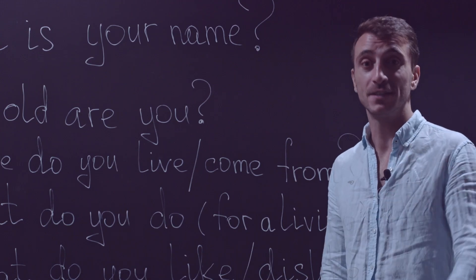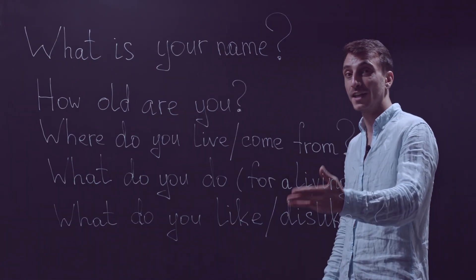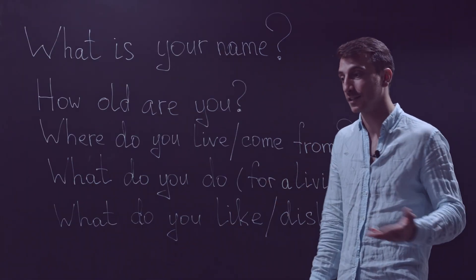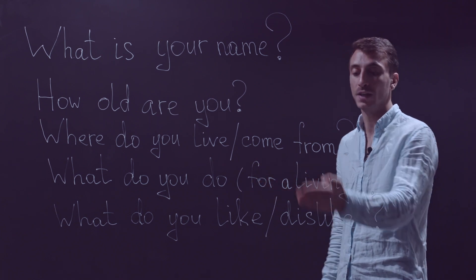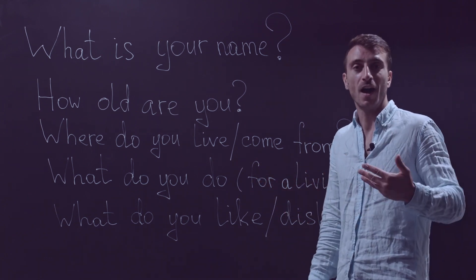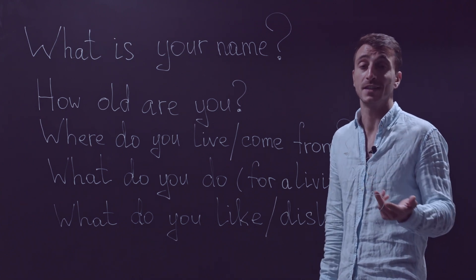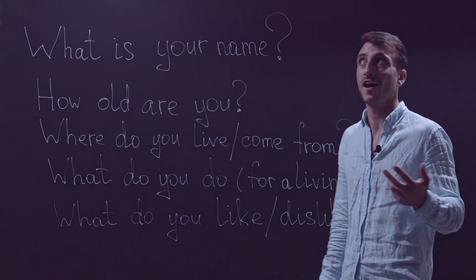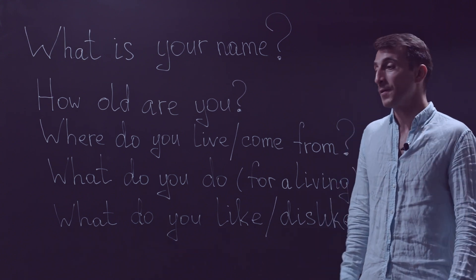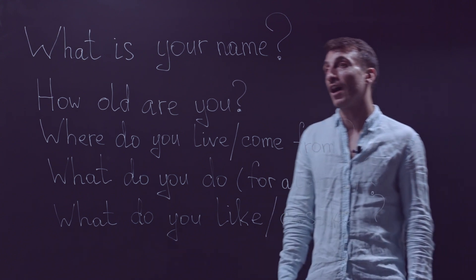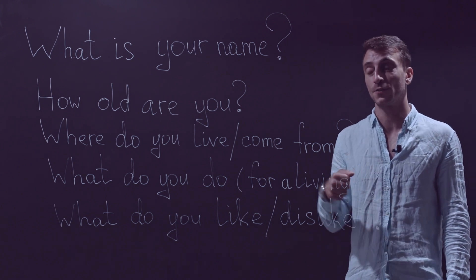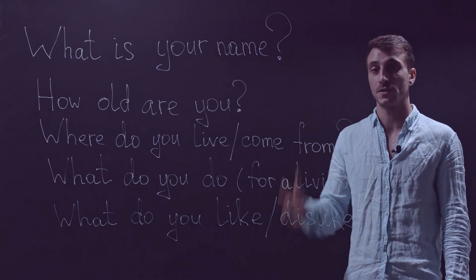And last but not least, the things that a person likes or dislikes. What do you like? Or what do you dislike? I like music. I like dancing. I like reading or some quiet places. That's how you could ask and get the information you need from the other person.